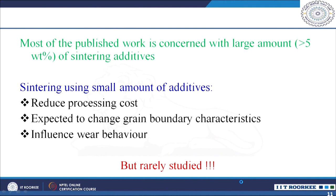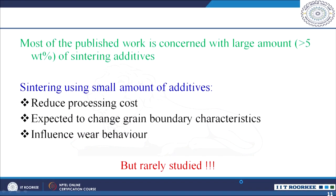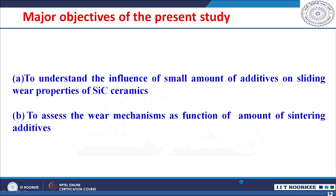The brief literature on liquid phase sintered silicon carbide ceramics indicates that sintering using small amounts of additives reduces overall processing cost and changes grain boundary characteristics, finally influencing wear behavior. However, the effect of small amounts of additives on mechanical and wear behavior has not been studied to a larger extent. In this context, the objectives of the present study are: to understand the influence of small amounts of additives on sliding wear properties of silicon carbide ceramics, and to assess the dominant wear mechanisms as a function of sintering additive amount.